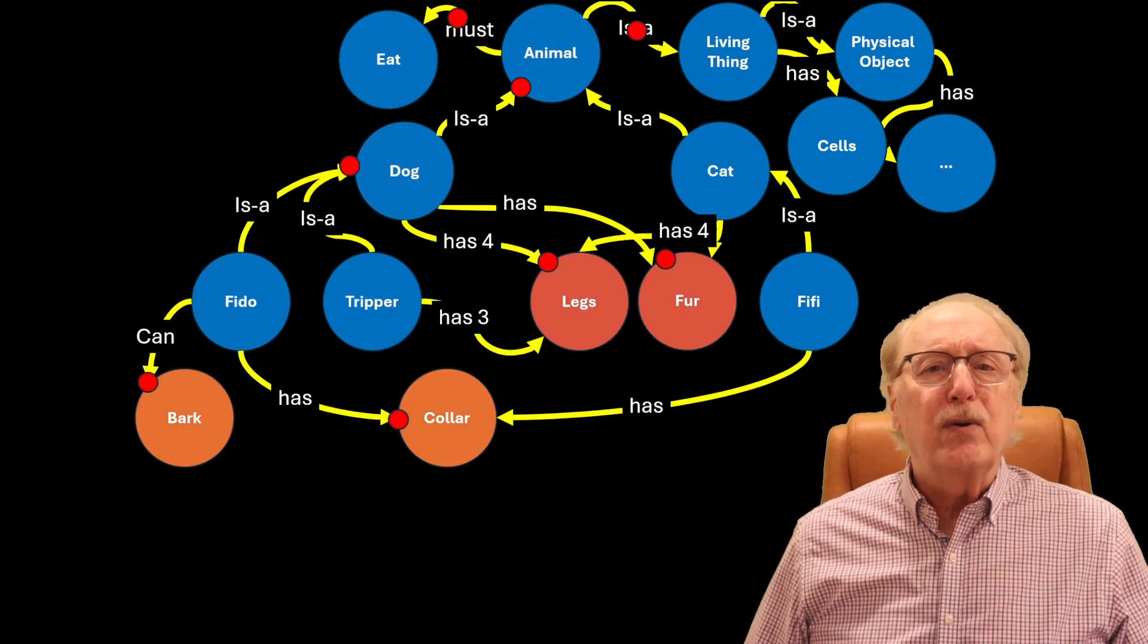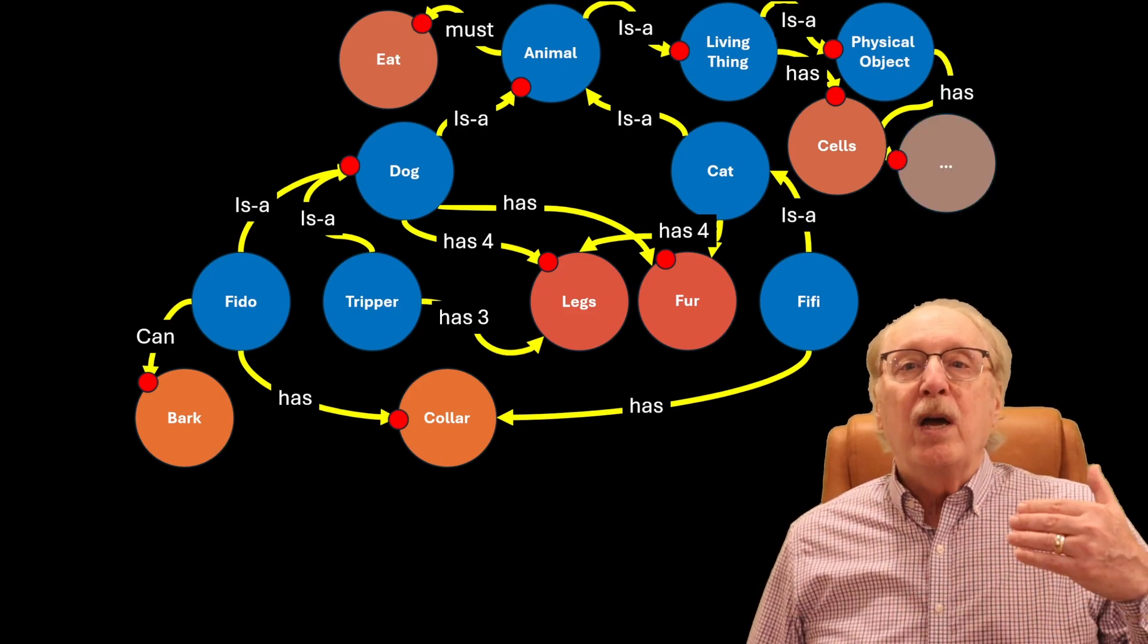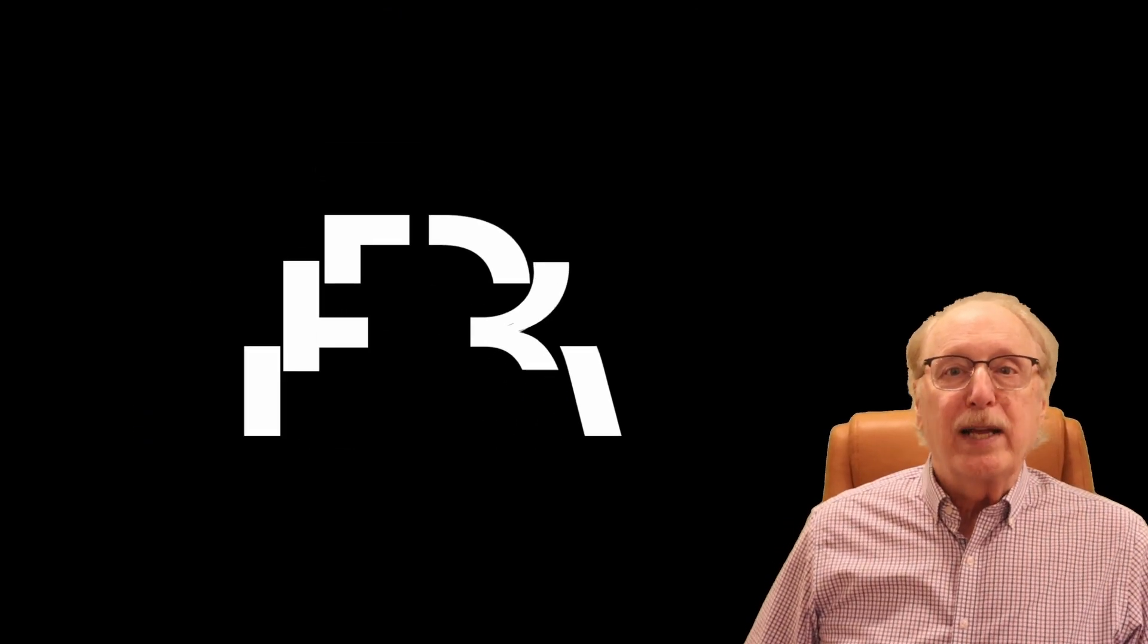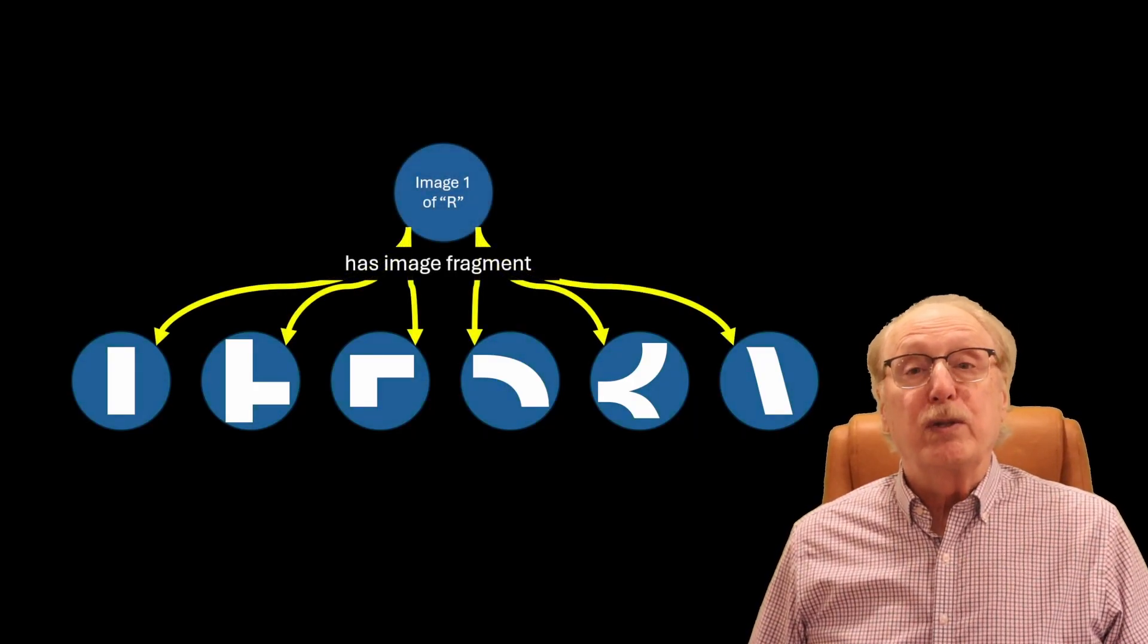Relationships include is-a, has-a, does, or belongs-to. A node might represent an image, like this image of the letter R, with relationships to the various arcs and corners which make it up.